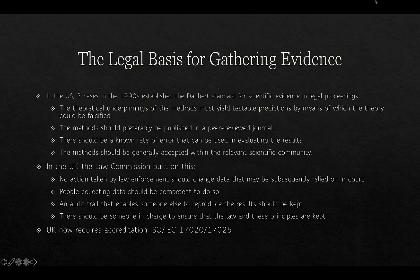In the US, three cases in the 1990s established the Daubert standard for scientific evidence in legal proceedings, and this is the underpinning of the legal basis for gathering evidence. The theoretical underpinnings of the methods must yield testable predictions by which the theory could be falsified — the process should be scientific. The method should preferably be published in peer-reviewed journals, there should be a known rate of error for evaluating results, and the methods should be generally accepted within the relevant scientific community.